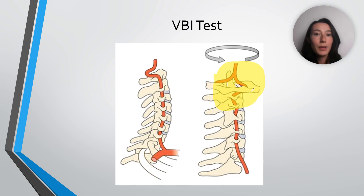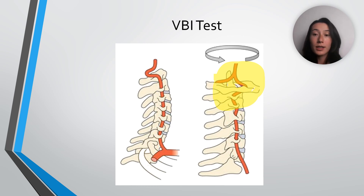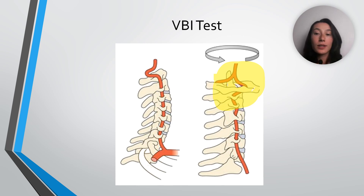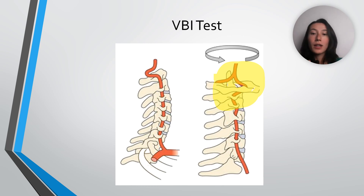Why does this matter? Let's put the pieces together. What position would you put a patient in to test for VBI? Your patient would be in supine, with their cervical spine placed in extension and rotation — it should make sense now. One final thing: note that the side you're testing is contralateral to the direction of cervical rotation. Looking at the highlighted image of a person's neck rotated to the left, you would be stretching out and testing the right vertebral artery.